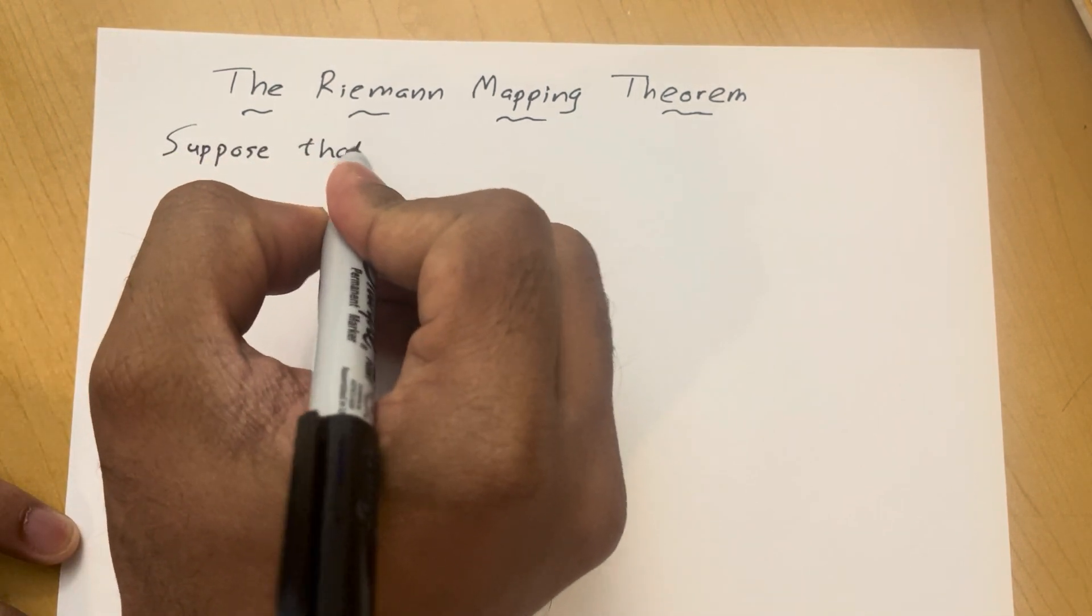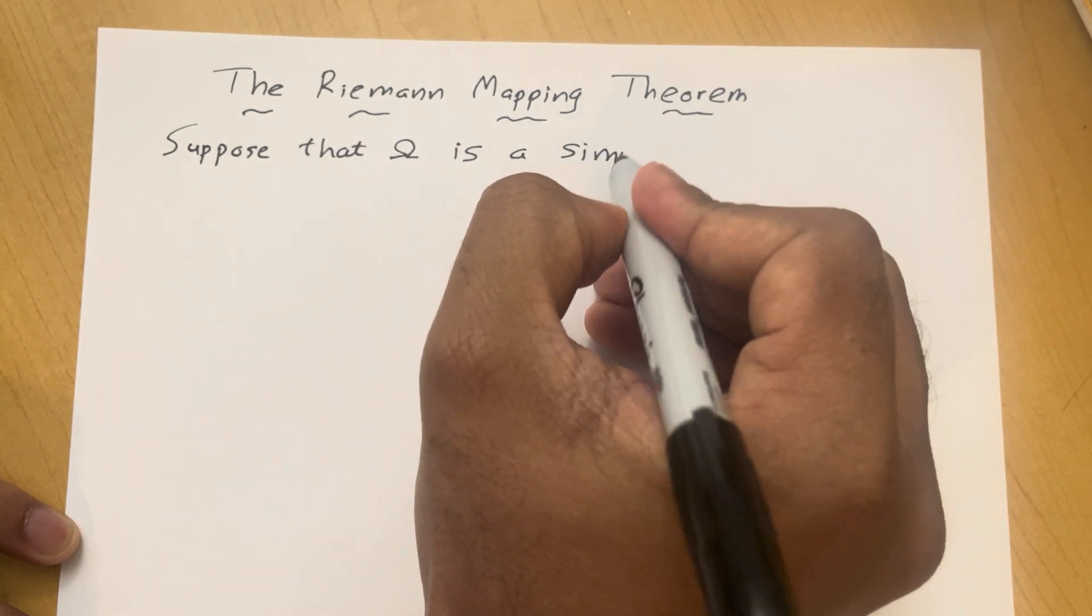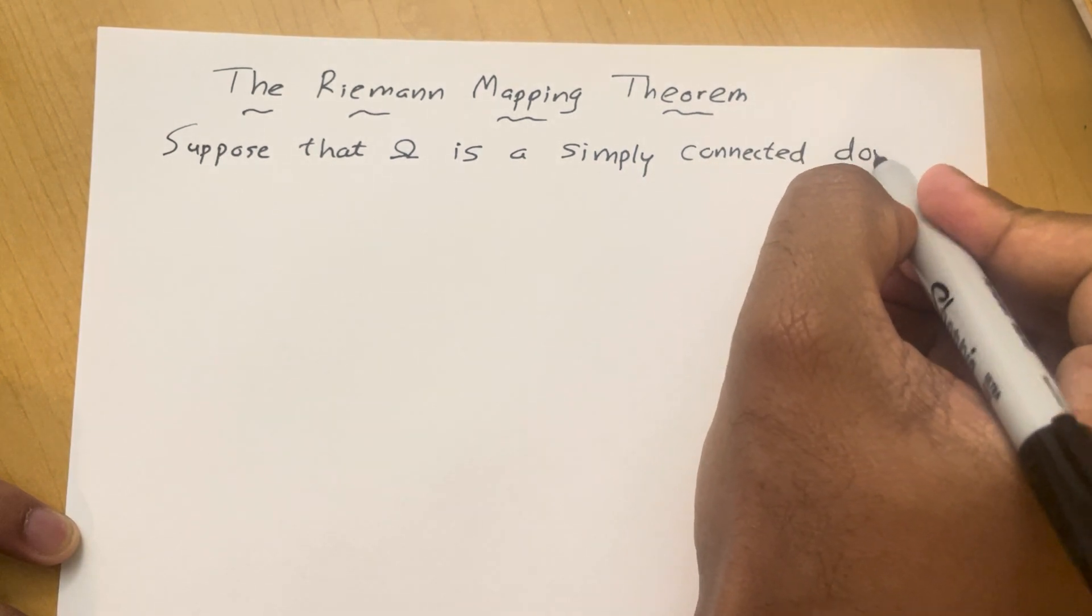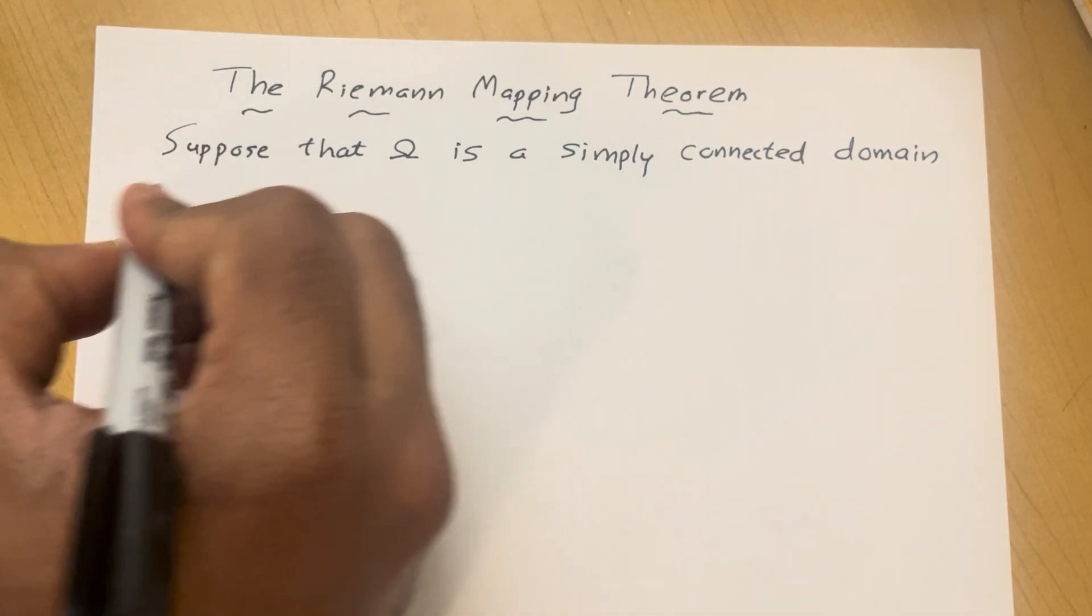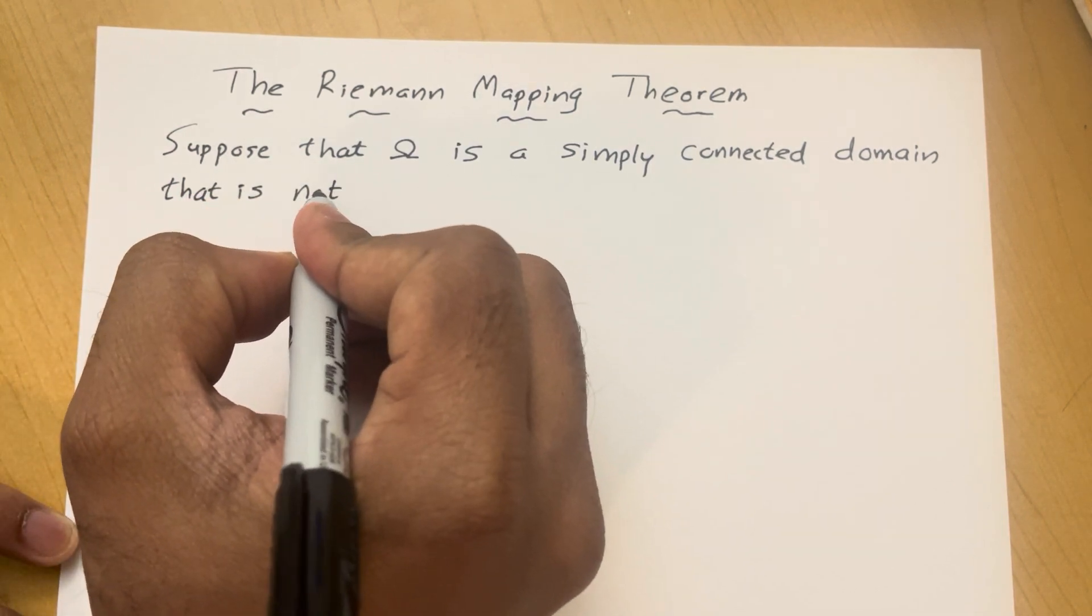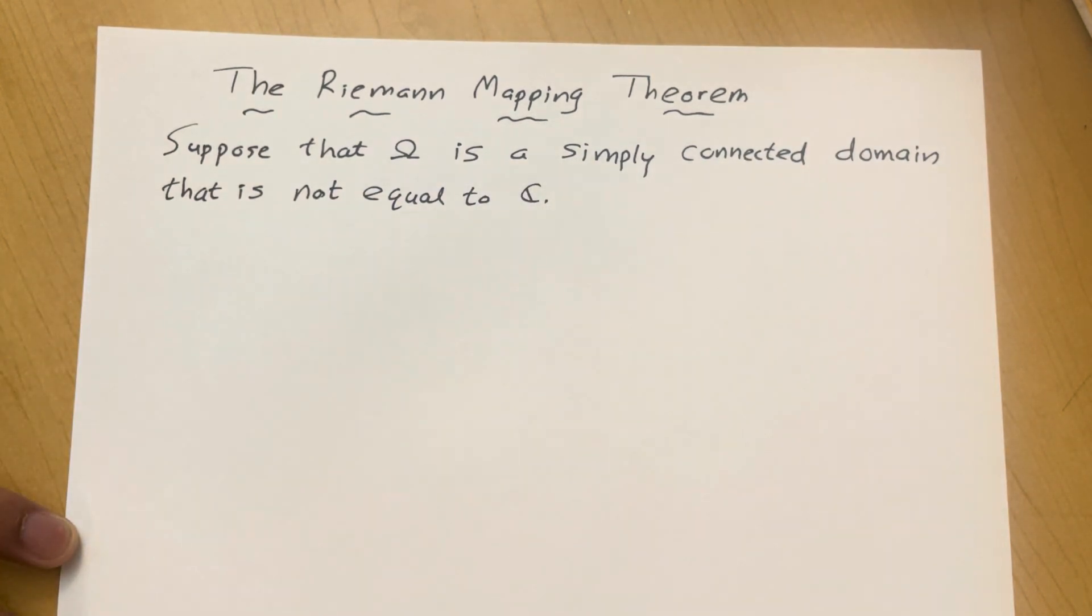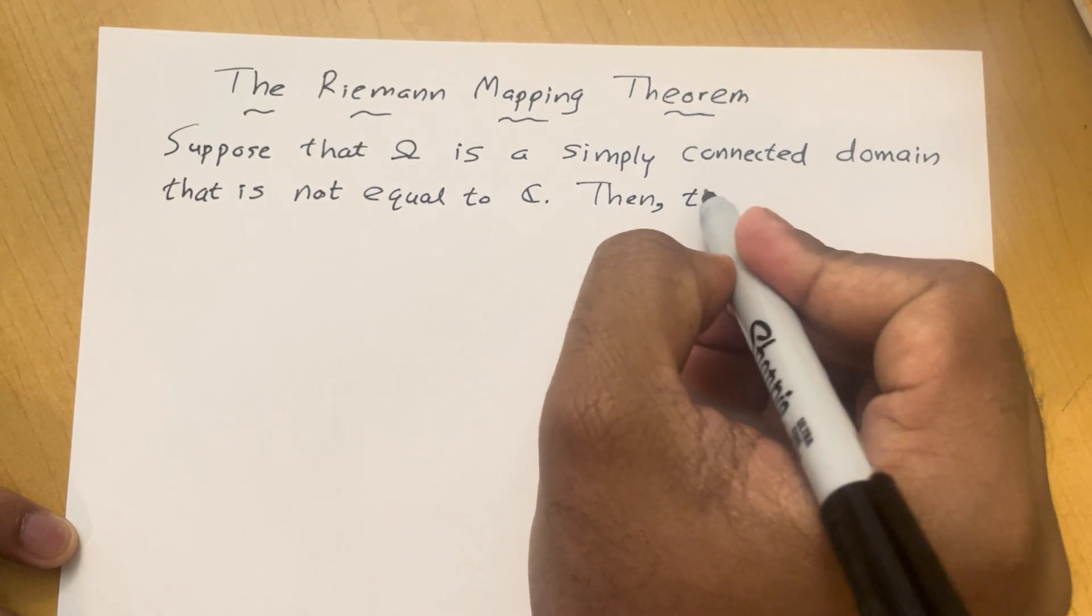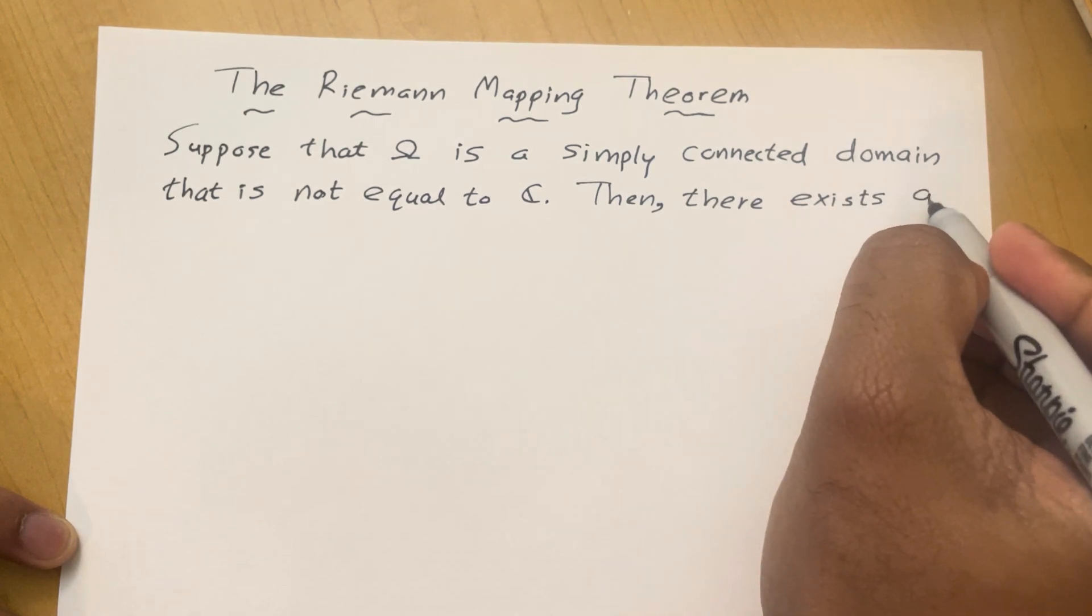Suppose that Ω is a simply connected domain that is not equal to the complex plane. Then there exists a unique conformal mapping.